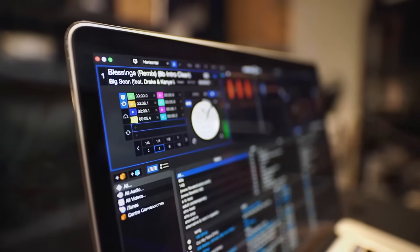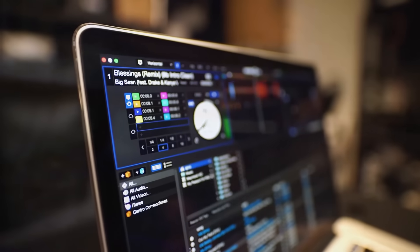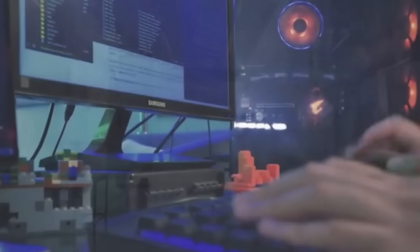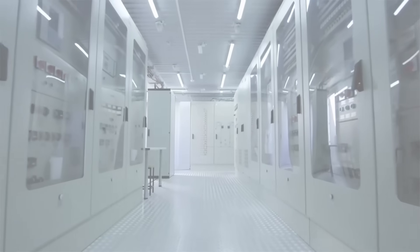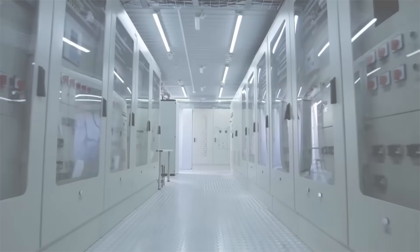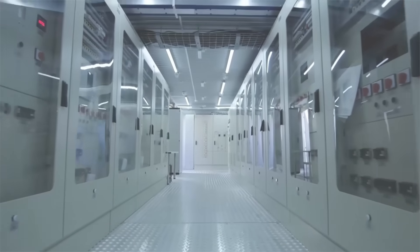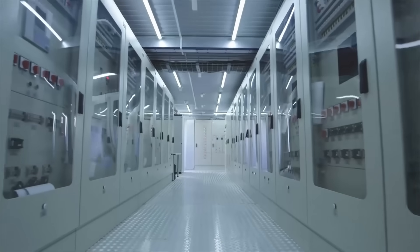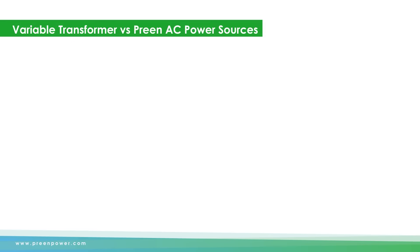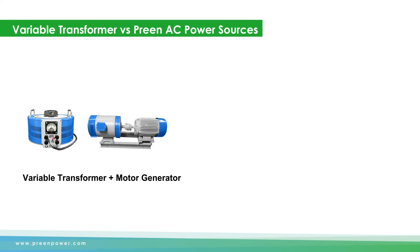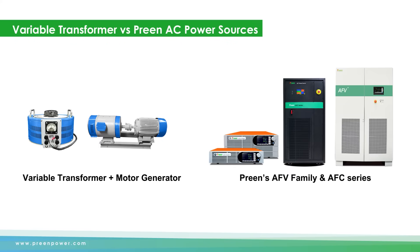With the advent of globalization, electronics need to meet the power requirements of different countries. Especially during the R&D and production stages, voltage and frequency variation tests are essential. There are two ways to conduct these tests: one is using a variable transformer along with a motor generator, and another is using a frequency converter or programmable AC sources, which provides remote control capability.